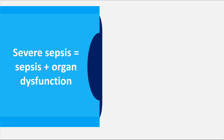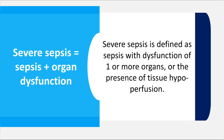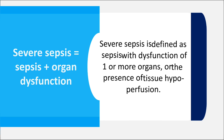What is severe sepsis? Severe sepsis is when there is sepsis plus organ dysfunction. These organ dysfunctions could be respiratory, heart, renal, or liver. This is due to tissue hypoperfusion. Failure of one or more organs plus sepsis indicates severe sepsis.